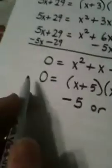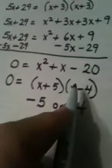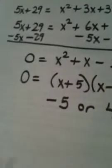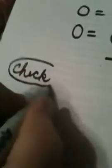x plus 5 equals 0 means x is negative 5, x minus 4 equals 0 means x is 4. Now, with a radical equation, you always have to check your answers in the original problem.